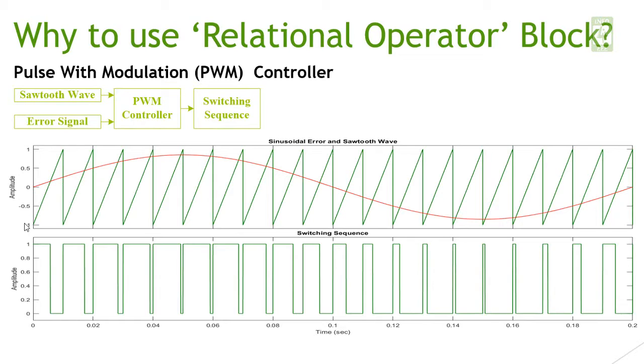In this figure, sawtooth wave is shown with green color and sinusoidal error signal is shown with red color. When amplitude of this error is greater than the amplitude of sawtooth wave it generates one value, and when amplitude of this error is less than amplitude of sawtooth wave it generates zero value.